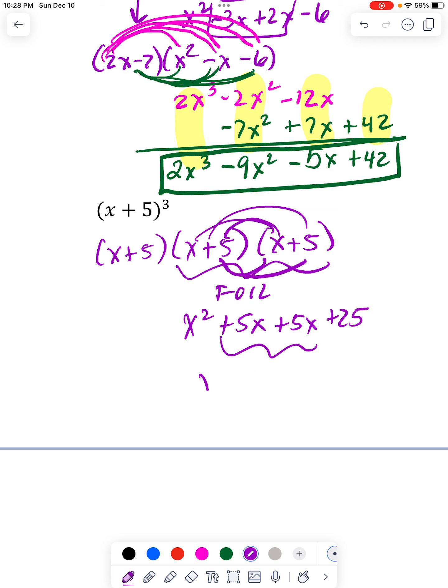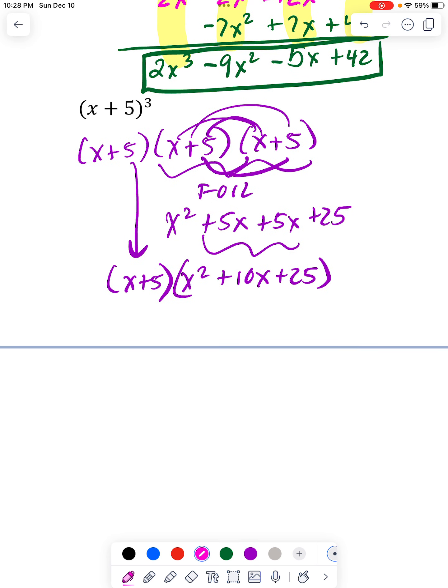And this is my FOIL result. But I have another x plus 5 to multiply it by. And so now I'll do that double distributing. Everything times x.